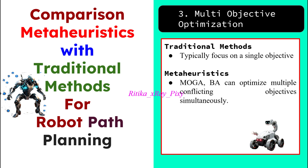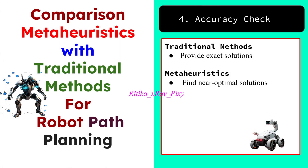When dealing with multi-objective optimization, classical algorithms often focus on a single objective like finding the shortest path and are not designed to handle multiple objectives simultaneously. Here we can use metaheuristic algorithms like multi-objective genetic algorithms or the bat algorithm, because these algorithms can optimize multiple conflicting objectives simultaneously.